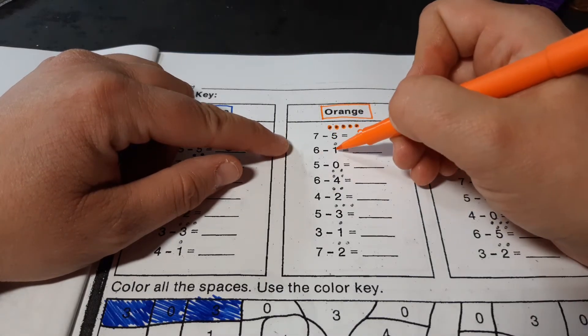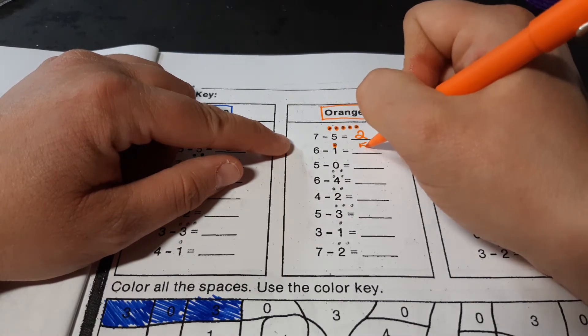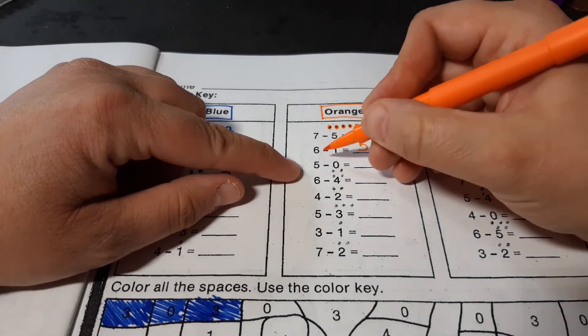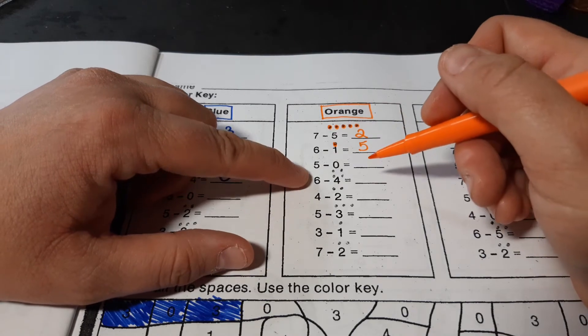Okay. We have 6 minus 1. 6, 5. Okay. That's my answer. I'm going to put it on the line. 5 minus 0. I think you can do that one. I'm going to skip that one. You can do that one.